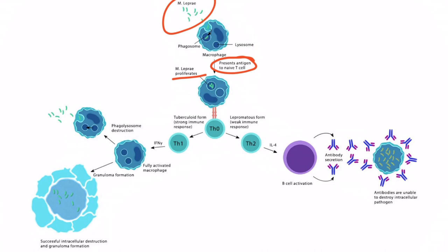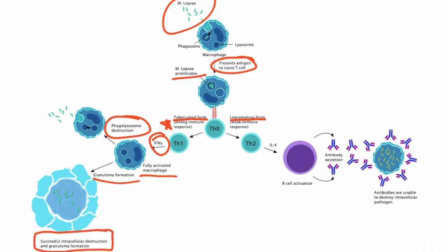It's at this point in the immune response that determines whether the patient develops the tuberculoid form or the lepromatous form of leprosy. Normally, a strong immune response will induce T-helper type 1 cells to release interferon gamma, which will fully activate macrophages. The macrophages can destroy the pathogen via phagolysosome fusion and successfully contain it via granuloma formation. The tuberculoid form of leprosy is associated with a low bacterial load, and the patient usually develops only minor symptoms such as hairless skin plaques.